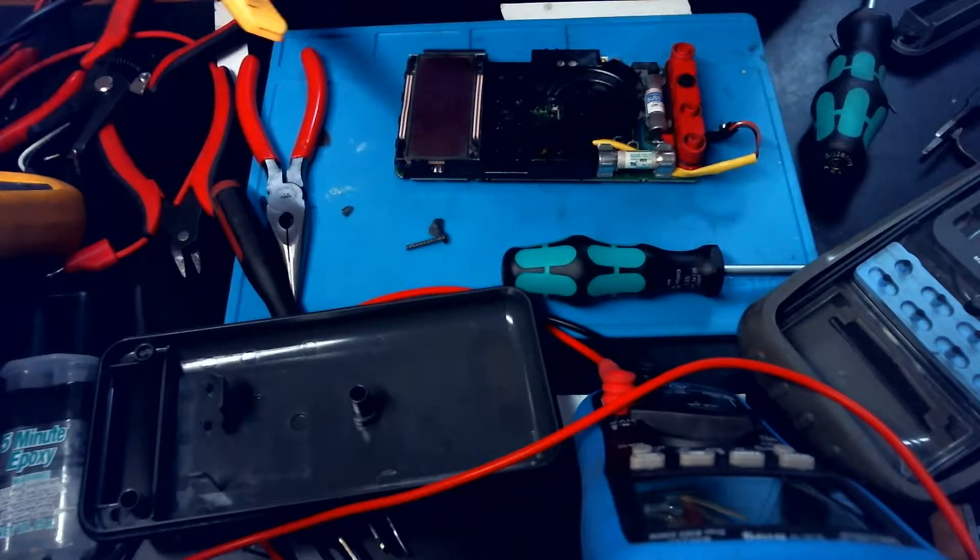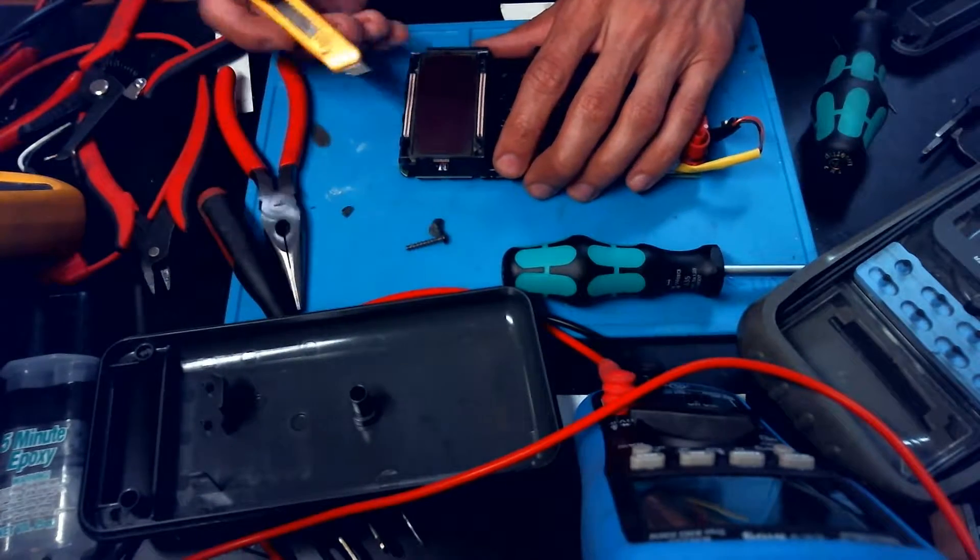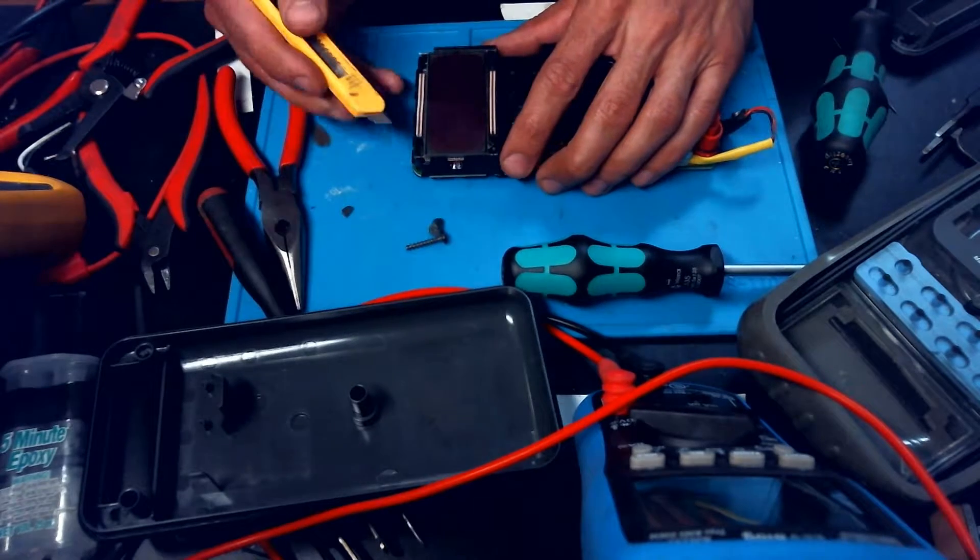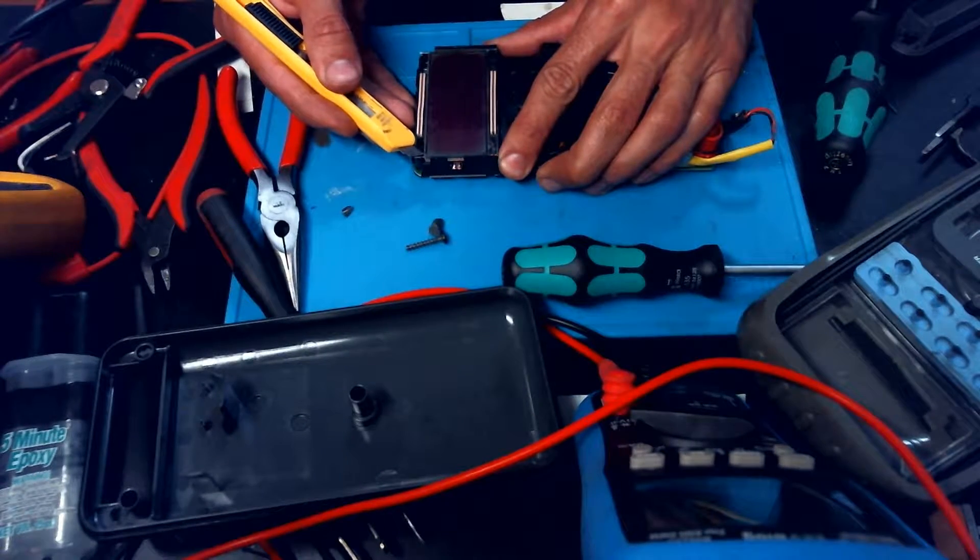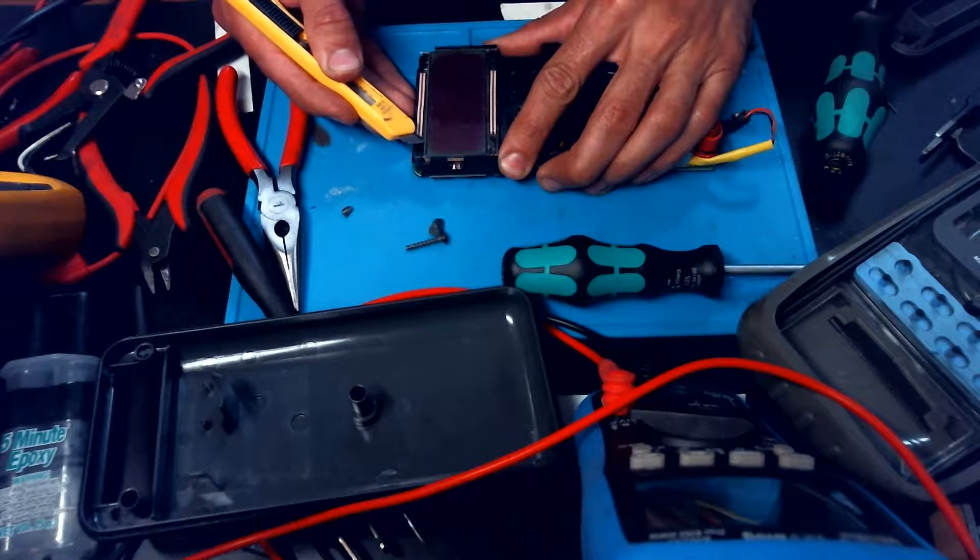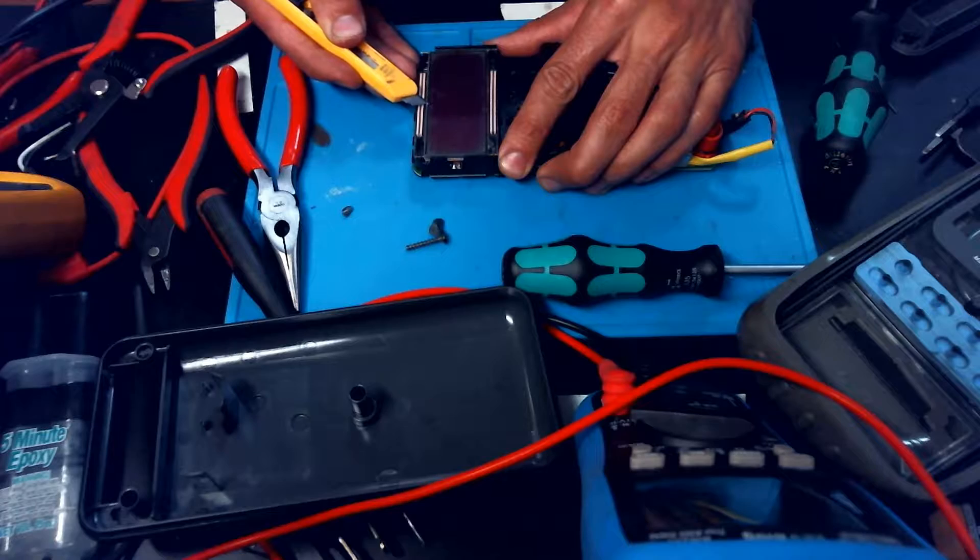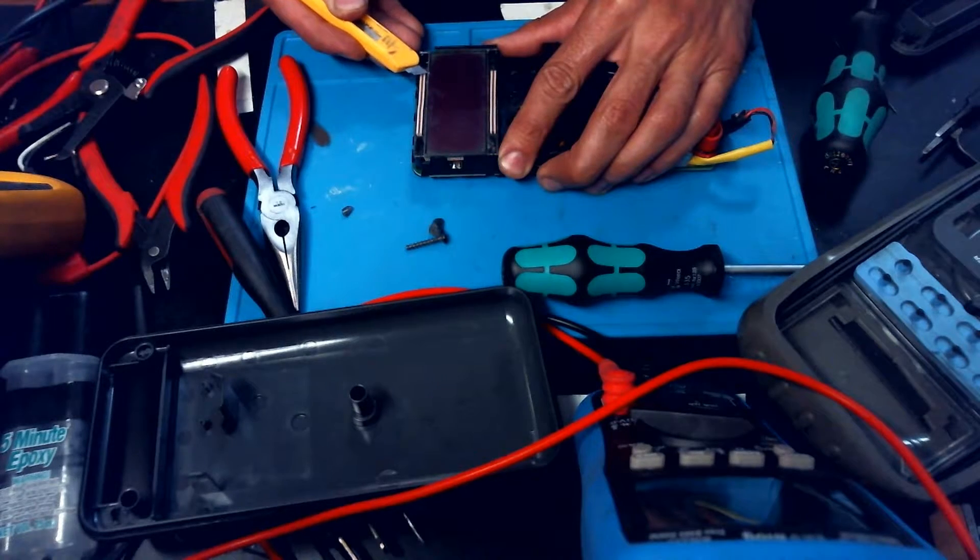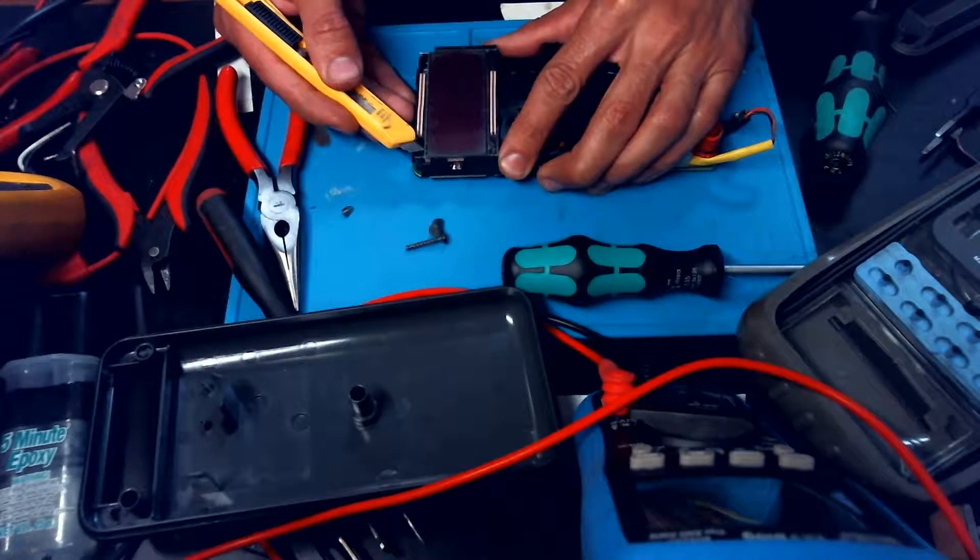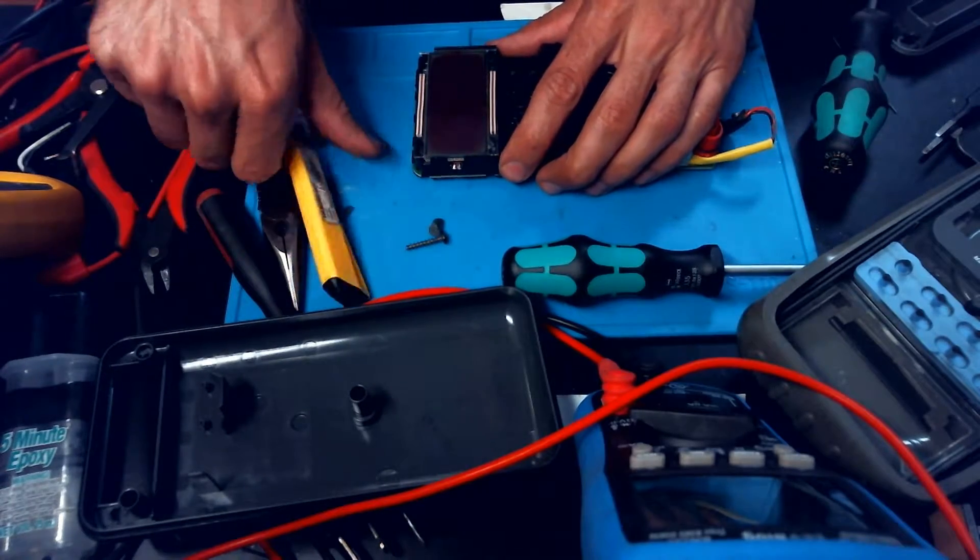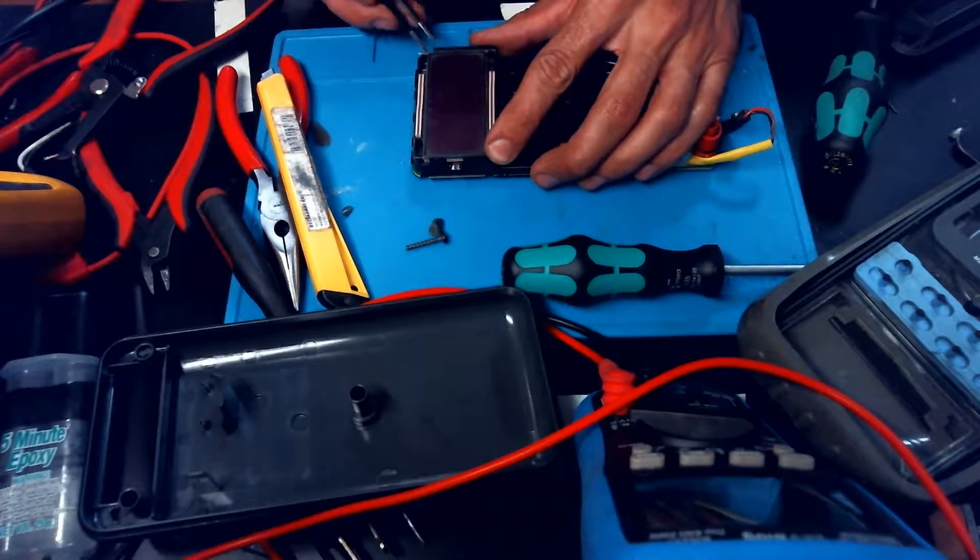We're going to go ahead and remove that and try to see what the screen looks like without it and whether or not we need to actually replace this. I'm just going to take my razor knife and very carefully come along this edge here and start opening it up. Once I've got it worked a little bit, we'll take the tweezers and see if we can just peel it off.